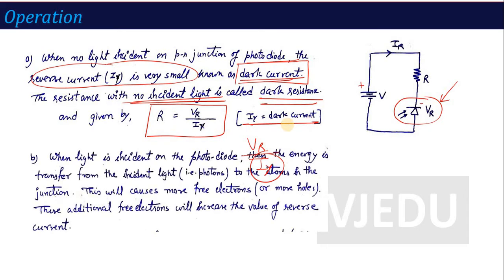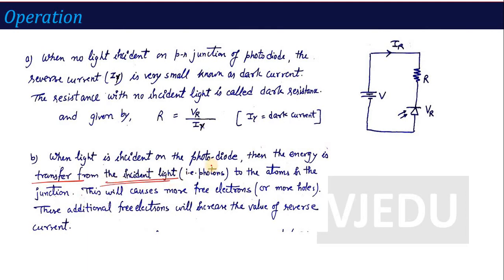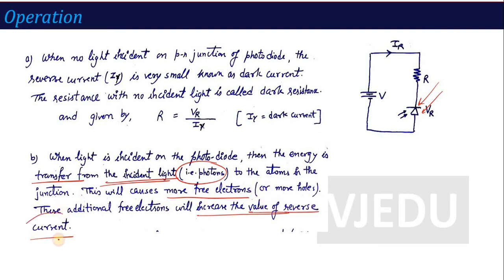When light is incident on the photodiode, energy is transferred from the incident light via photons to the PN junction. This causes more free electrons and holes to be generated. The photons collide with stationary charges in the semiconductor, kinetic energy increases, stationary atoms start moving and break their covalent bonds. This generates more free electrons, which increases the value of reverse current.